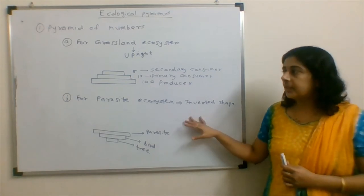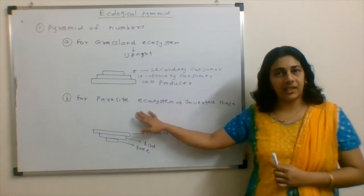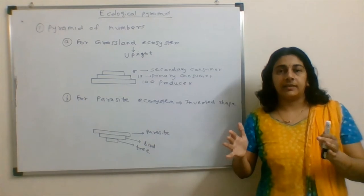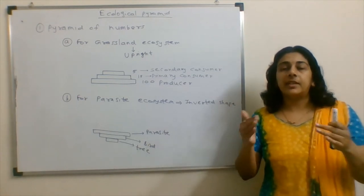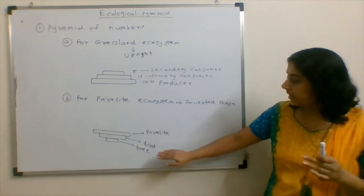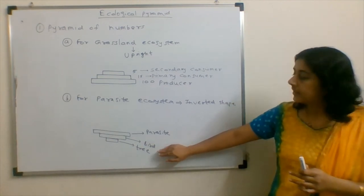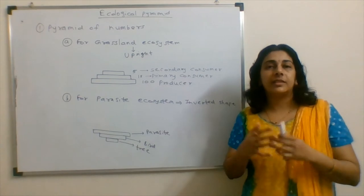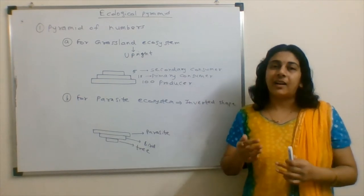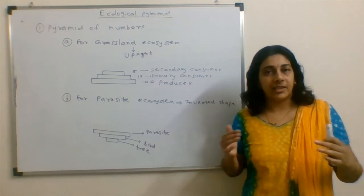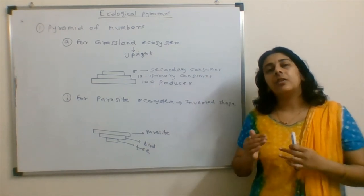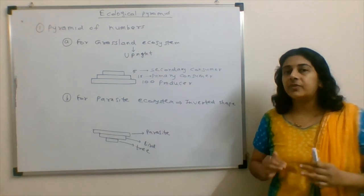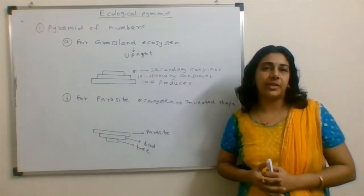Now, secondly, if we see for parasitic ecosystem. What is this parasitic ecosystem? There is one tree. Let's consider one tree is there. On the tree, there may be a number of birds. So here, the pyramid becomes inverted. One tree, number of birds, and those birds would be having different number of parasites in them. Again, there may be hyperparasites, so again the number would increase. So in this way, this pyramid becomes an inverted pyramid. We find inverted pyramid in case of pyramid of numbers.